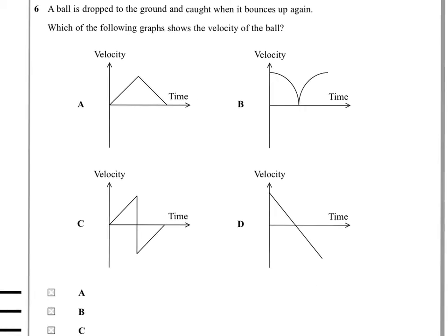Question 6. A ball is dropped to the ground and caught when it bounces up again. Which of the following graphs shows the velocity of the ball? Well, crucially, the ball will have downward and upward velocities, so it's going to have velocities of both positive and negative signs. So that rules out these two. So which one of these is appropriate?